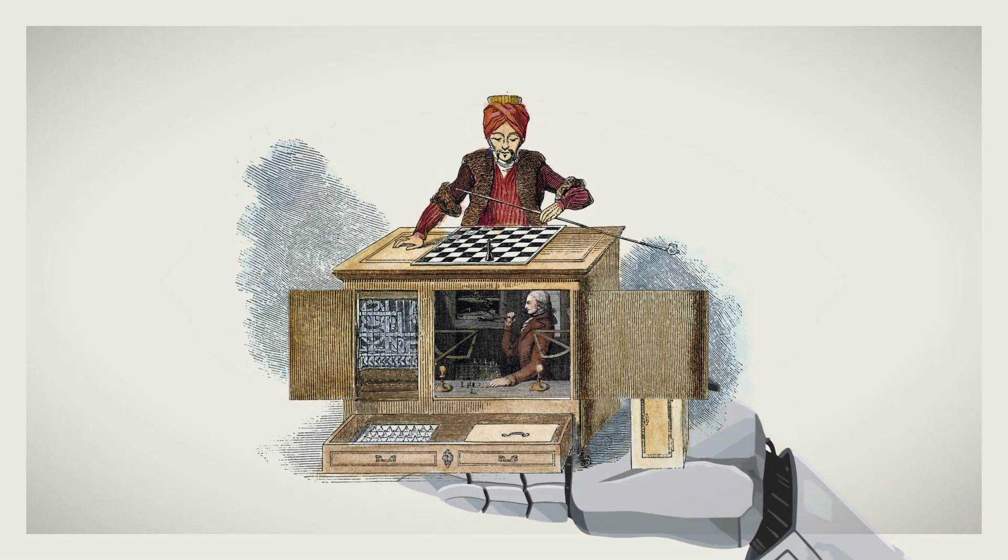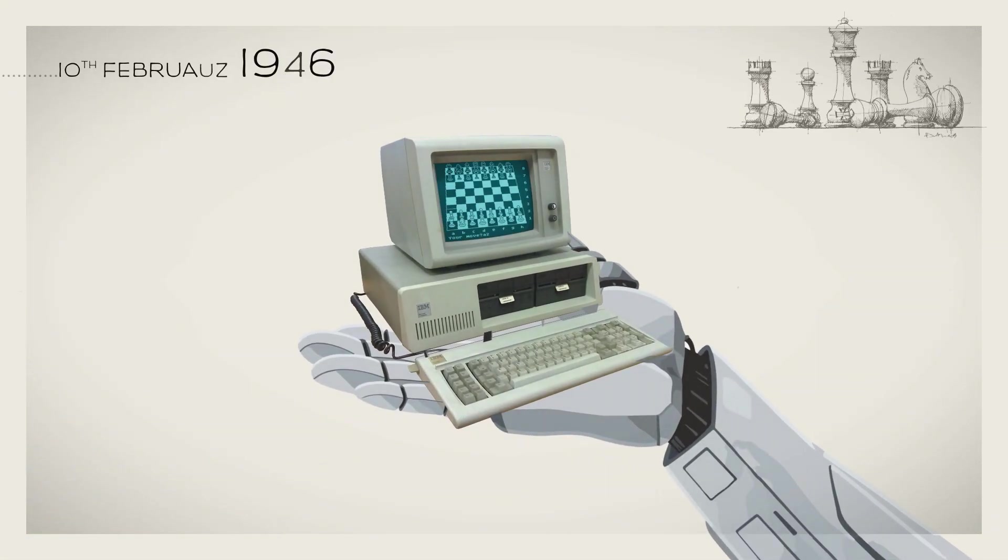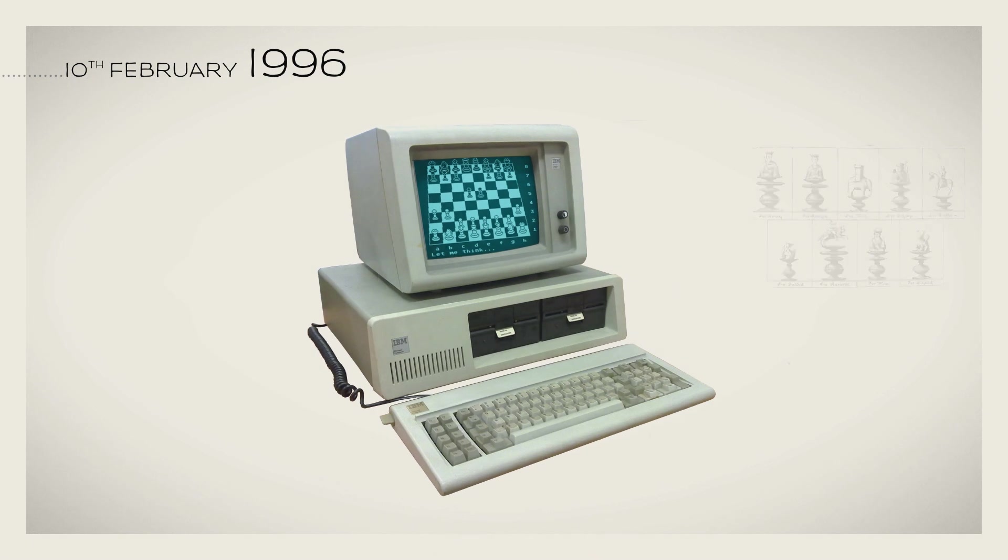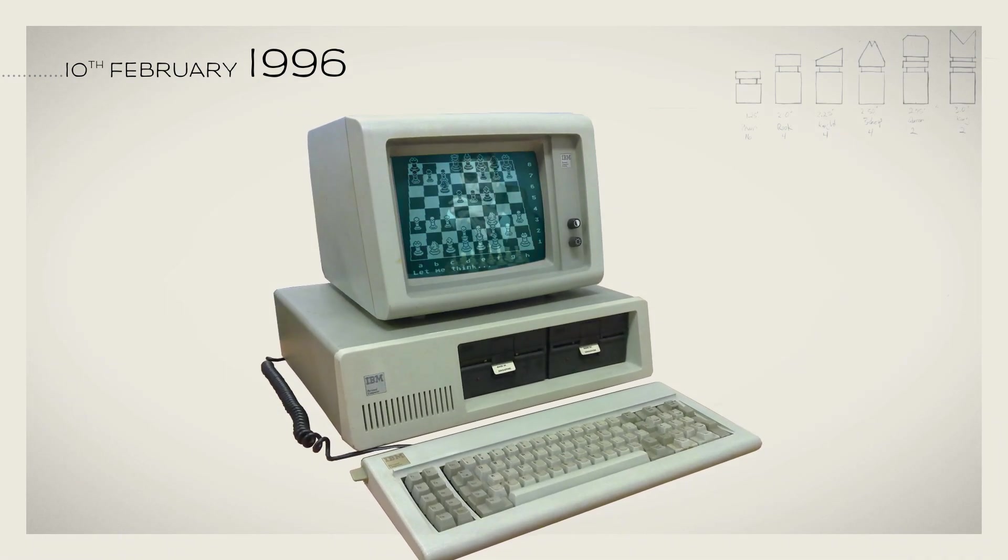On the 10th of February 1996, IBM's Deep Blue was the first computer to win a game of chess against the world champion of the time. It defeated Gary Kasparov.